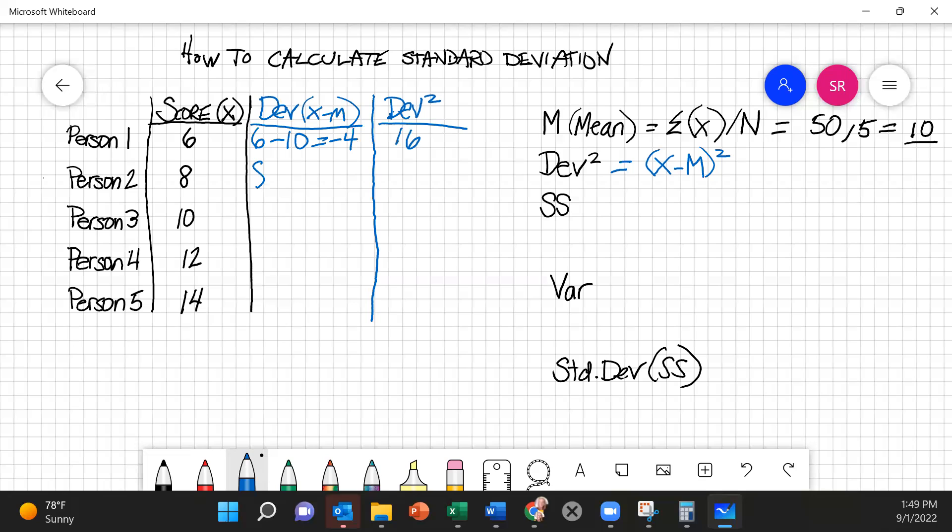Our next person has a score of 8 minus the mean of 10 equals negative 2, which if we square it, we get 4. Next, 10 minus 10 equals 0. If we square it, we get 0. 12 minus 10 equals 2. If we square it, we get 4. 14 minus 10 equals 4. If we square it, we get 16.